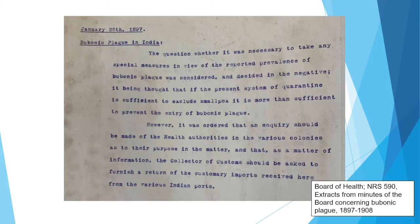By December 1899, the plague had arrived in New Caledonia, which stepped up the alerts in New South Wales because that's quite close and a lot of ships travel between New South Wales and New Caledonia. Ships arriving from there were quarantined for 12 days and fumigated. At the same time, the Board of Health was seeking permission from the government to bring plague bacillus samples to Australia for study, but these requests were not granted.